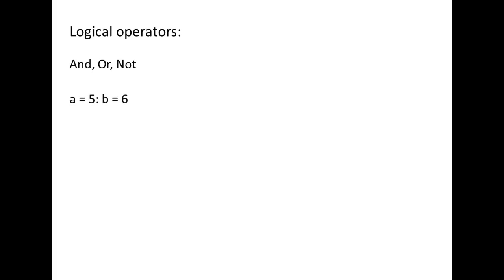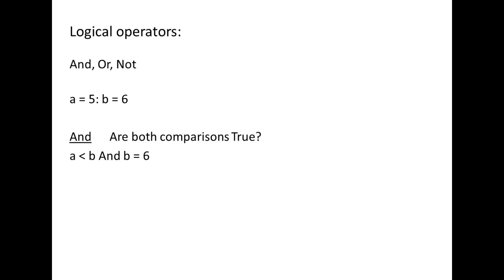Let's assume a and b are double variables, with a assigned the value 5 and b assigned the value 6. When you use the AND operator, you are asking the question: are both comparisons true? If the answer is yes, a true is returned; if the answer is no, a false is returned. For example, a less than b AND b equals 6: are both comparisons true? 5 less than 6 and 6 equals 6 — true and true. Since both comparisons are true, the entire expression is true.